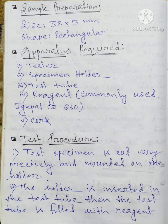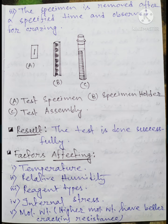For the test procedure, the test specimen is cut precisely and mounted on a holder. The holder is then inserted into the test tube, and the test tube is filled with the reagent. The changes in the properties of the specimen are then observed.